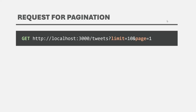When requesting paginated data from the API, we have to specify these query parameters with the request. We usually call them limit and page. Limit specifies how many records we want per page, and page specifies for which page we are requesting the data. The client can be Postman, your UI application, or a mobile app.